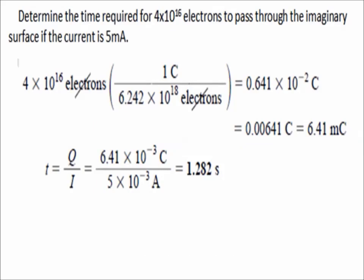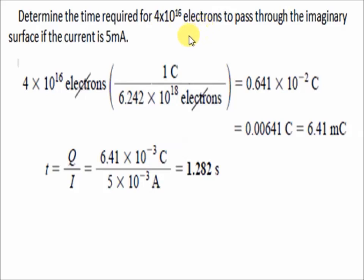Now, let's answer some problems regarding this topic to understand how to use the formulas. In problem number 1: determine the time required for 4 times 10 to the 16 electrons to pass through an imaginary surface if the current is 5 milliampere. The question is: given a current of 5 milliampere, what is the time for those 4×10¹⁶ electrons to pass? The formula is I = Q over T, and we are required to find the time, so T = Q over I.